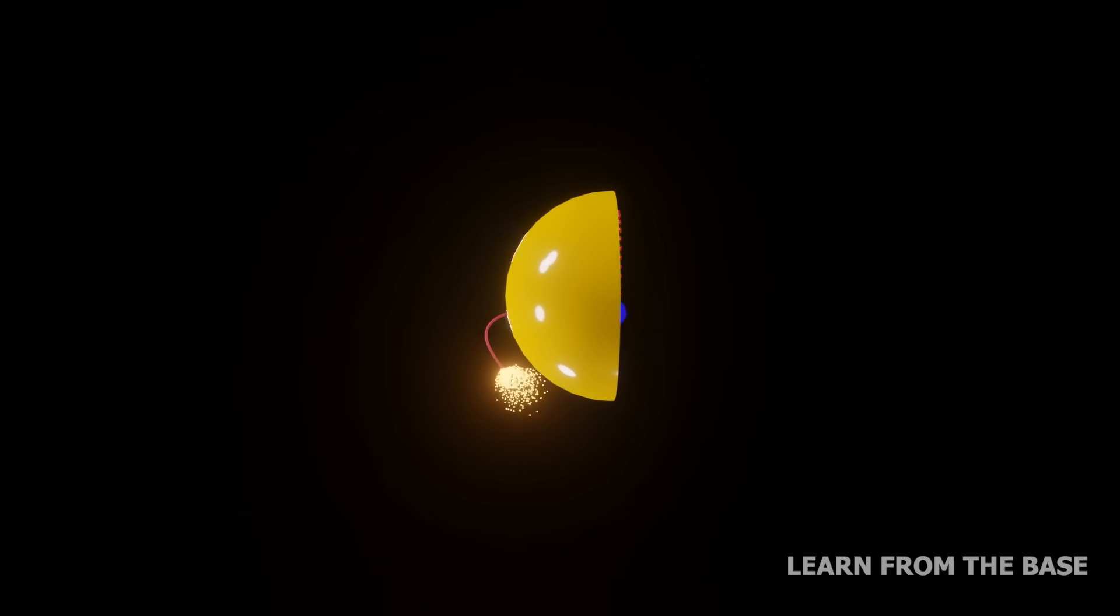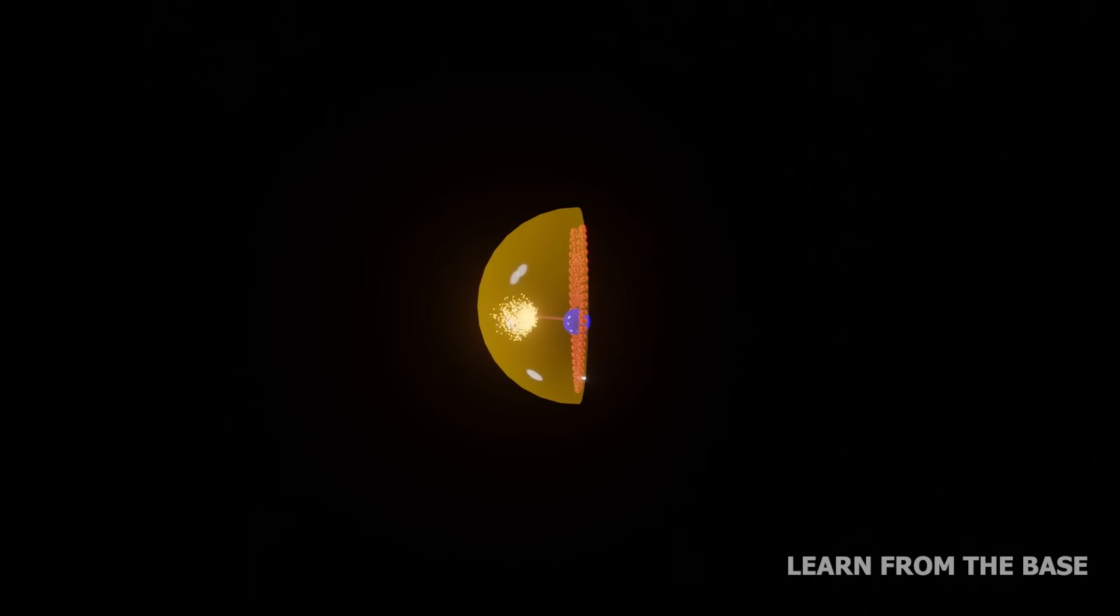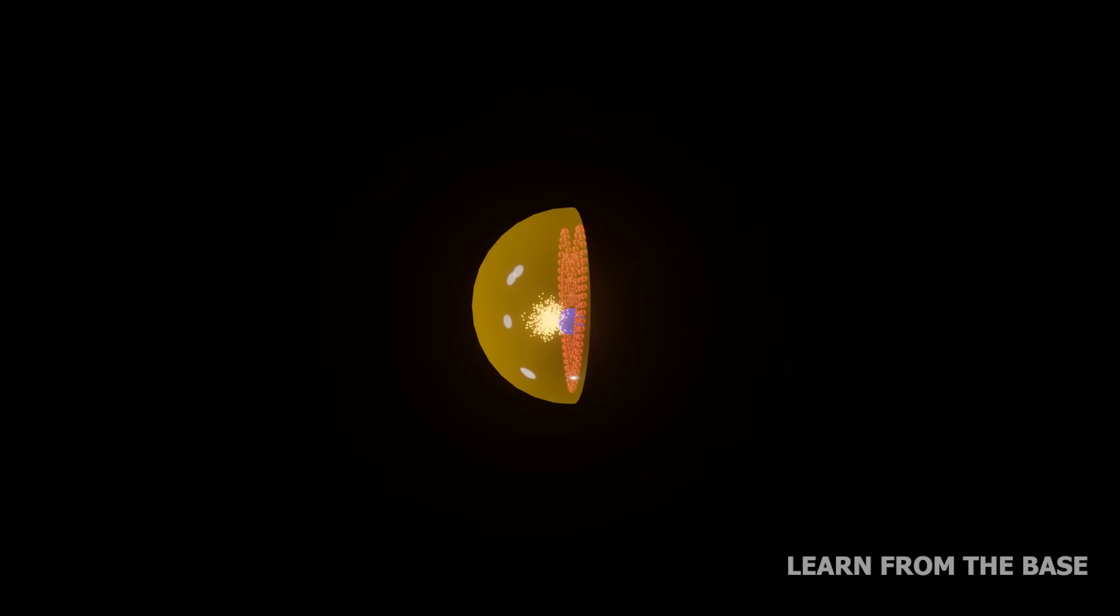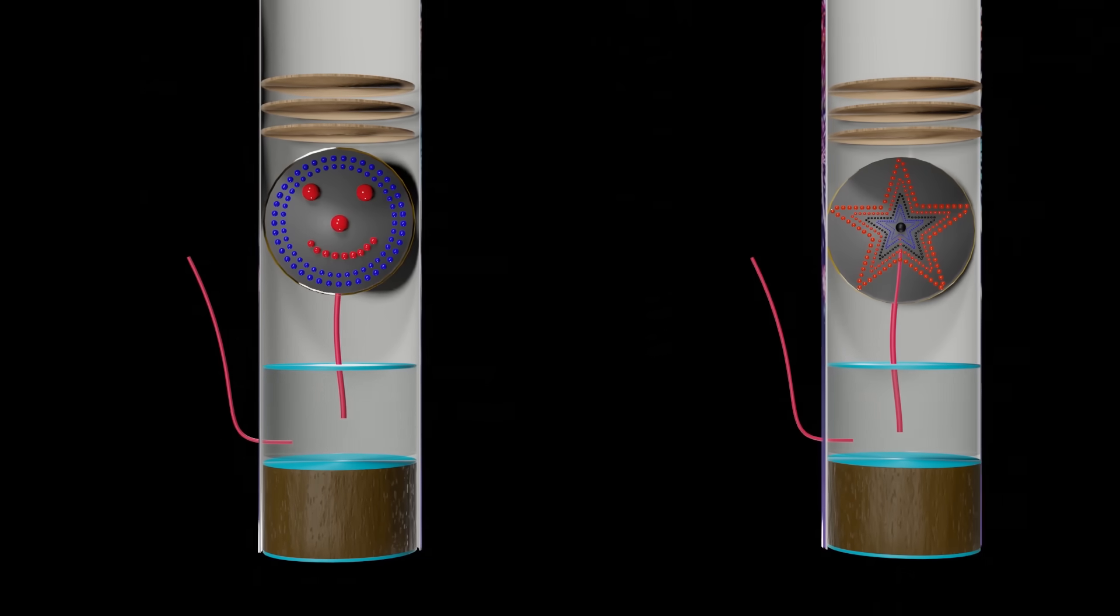When the shell reaches a certain height, the time delay fuse lights the burst charge. Then the burst charge explodes. As a result, the pyrotechnic pellets are burning and expanding in the sky. Different patterns of pellets inside the shell create different display properties.